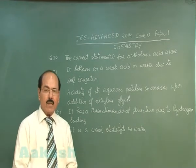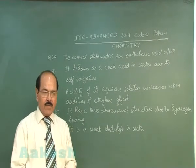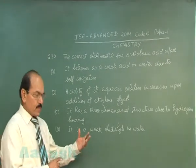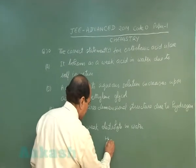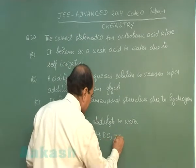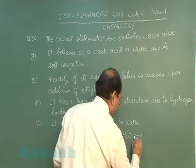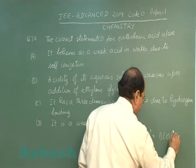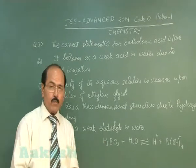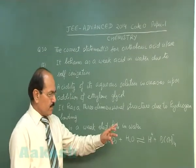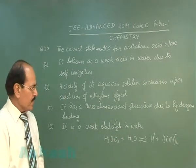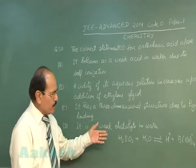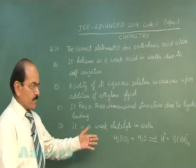Ortho boric acid does not ionize in water by self-ionization — it is in fact a Lewis acid. It reacts with water releasing hydrogen ions, and water functions as a Lewis base. Ortho boric acid is a weak monobasic Lewis acid. The 4 OH groups attached to boron in the anion condense with the OH groups of ethylene glycol, so on addition of ethylene glycol the equilibrium shifts in the forward direction and the acidic strength of boric acid increases.